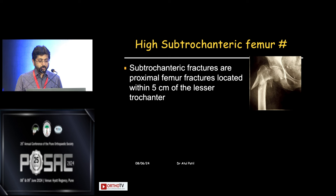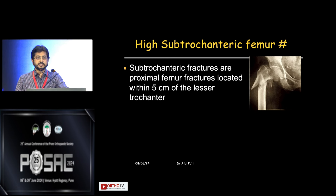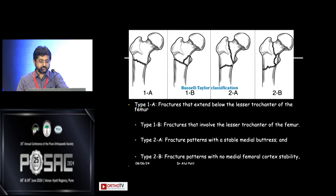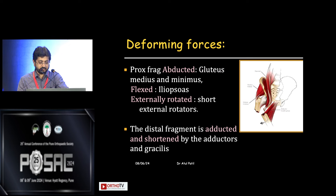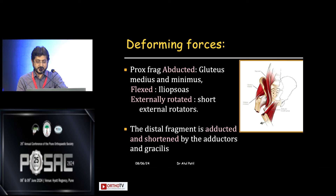High subtrochanteric fractures are proximal fractures located 5 cm from the lesser trochanter, leading to difficult situations for the orthopedic surgeon in terms of how to reduce them properly. The deforming forces are well known: iliopsoas and short external rotators proximally, and adductors distally. These forces have to be nullified.